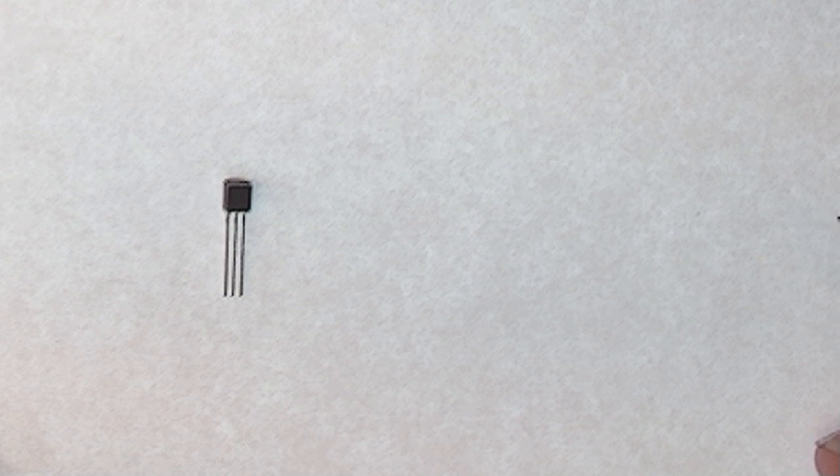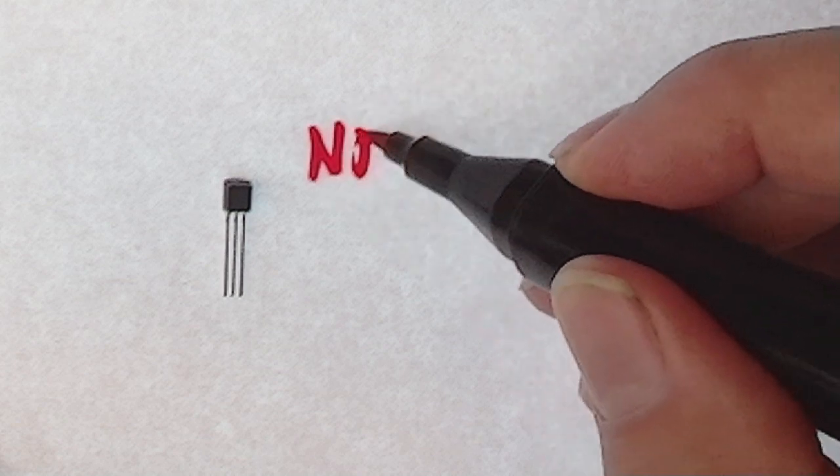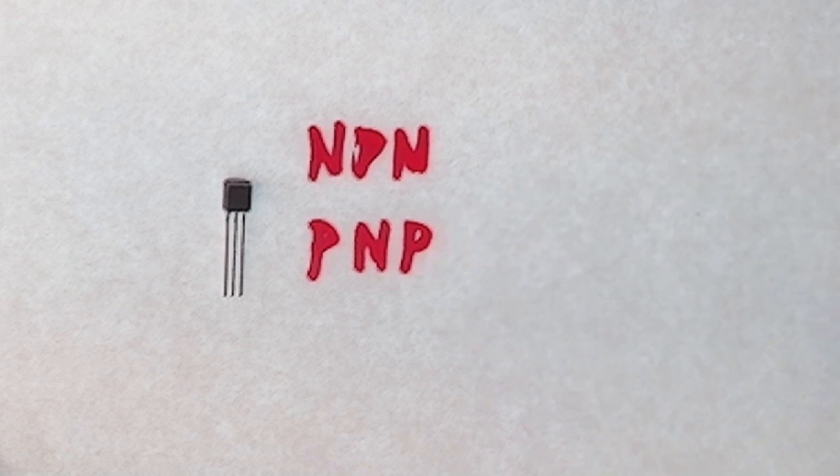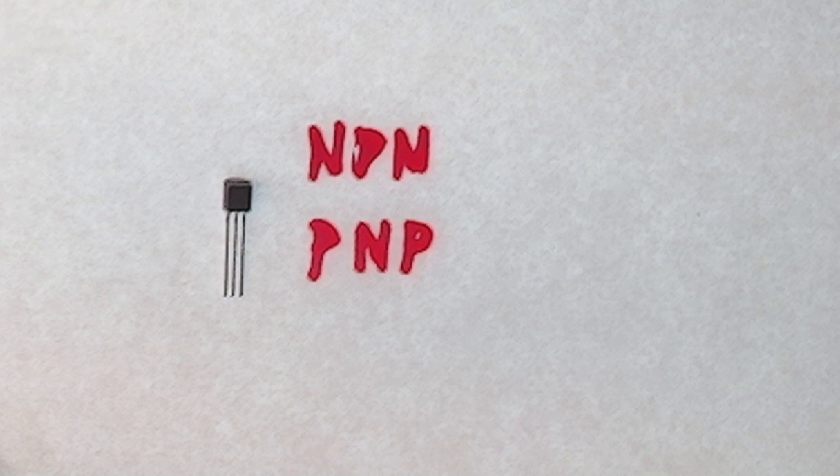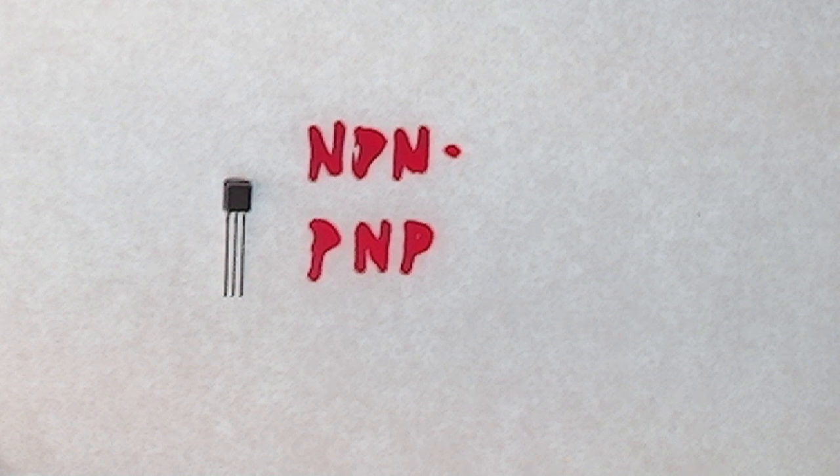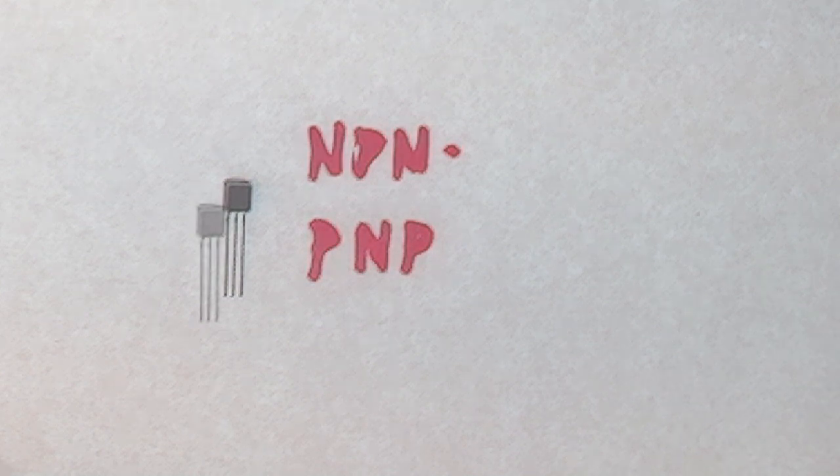Now there are two main type transistors: we have the NPN and the PNP transistor. The NPN is the most commonly used, especially for switching circuits, so for now we're going to concentrate on the NPN and implement it in our circuit.